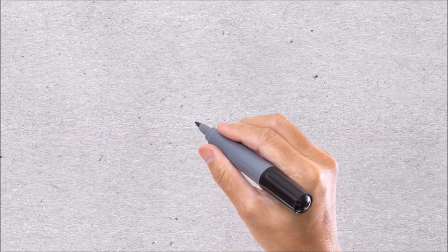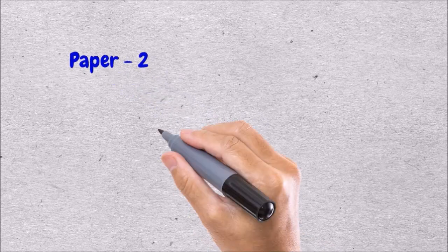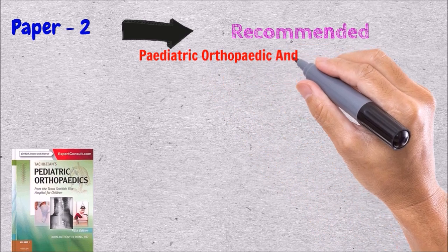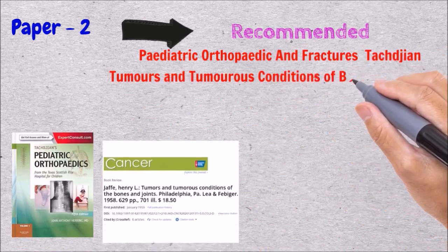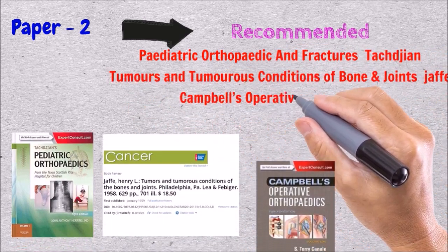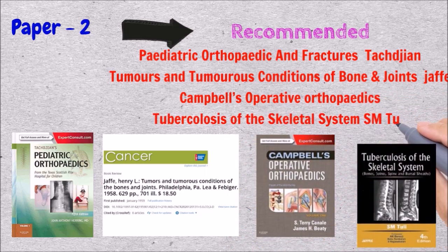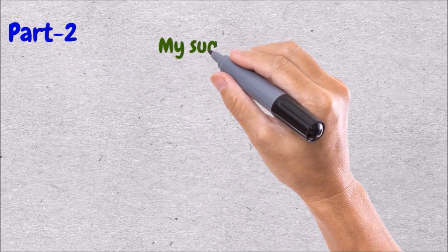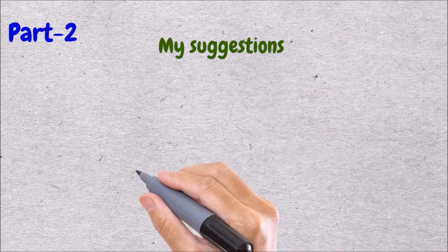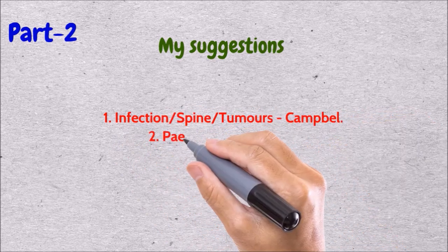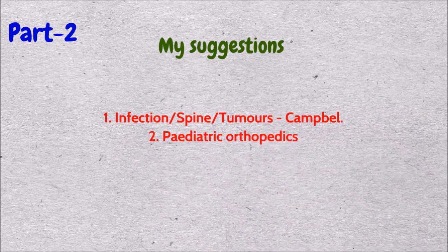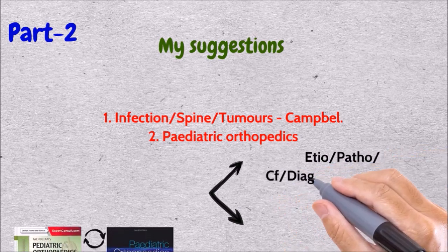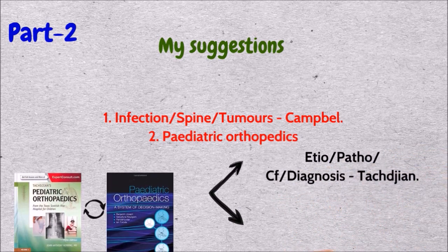For Paper 2, where major questions are from paediatric orthopaedics and spine, the books recommended are Paediatric Orthopaedics by Tachdjian, Jaffe's Tumours and Tumourless Conditions, Campbell's Operative Orthopaedics, and Tuberculosis by S.M. Tuli. My suggestion for Paper 2: infections, spine, and tumours I read from Campbell; and for paediatric orthopaedics, the initial part — especially pathogenesis, diagnosis, and classifications — I read from Tachdjian, while management is very well covered in Benjamin Joseph.